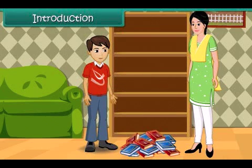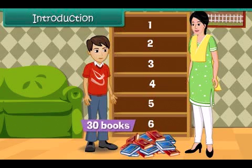Look at this bookshelf. There are six sections in the bookshelf. Ram's mother asked him to arrange 30 books in the shelf with each section containing equal number of books. Now, how is Ram going to do the work?